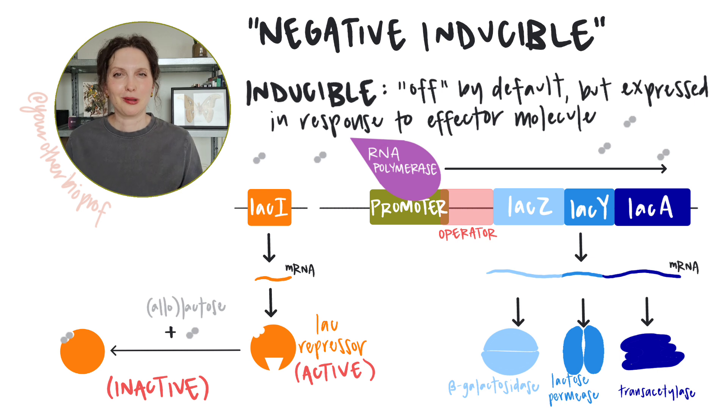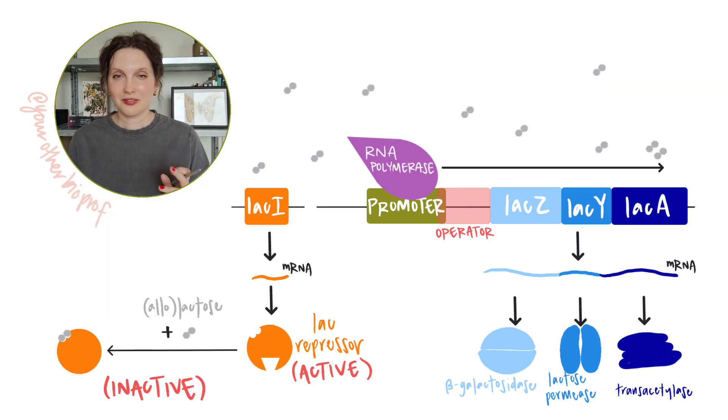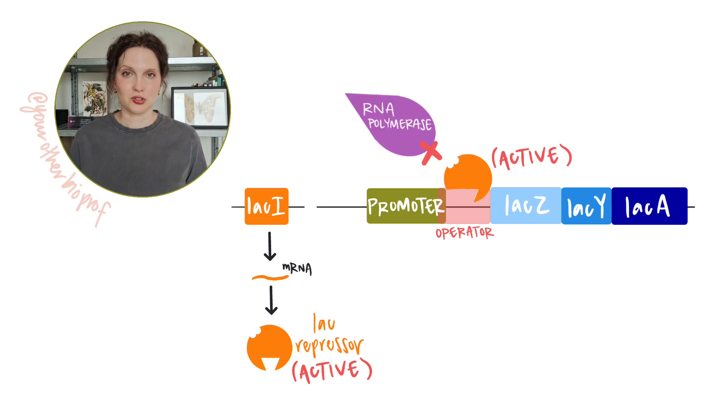And if you want to learn more about positive, negative, inducible, and repressible operons, I have a whole other video just on that. Lactose availability inactivates the repressor molecule, allowing transcription to occur. Whereas in the absence of lactose, the repressor stays active and blocks transcription.